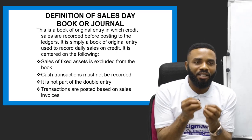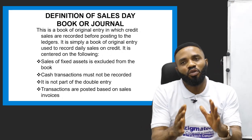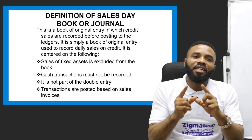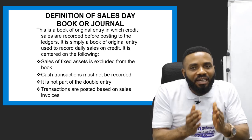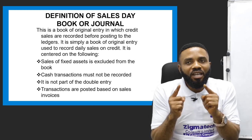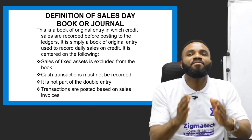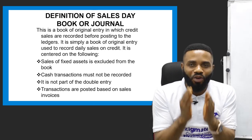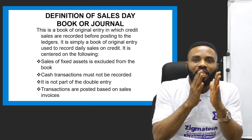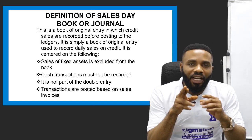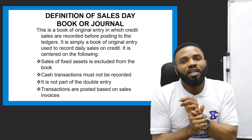It is called a book of original entry because transactions are expected to be recorded in this book before they are posted to the ledger. Whenever a transaction takes place, there is a book used to record it depending on the nature of the transaction. Since this particular book is exclusively for daily sales on credit, every credit sale you make on a daily basis is expected to be recorded here before posting to the ledger.